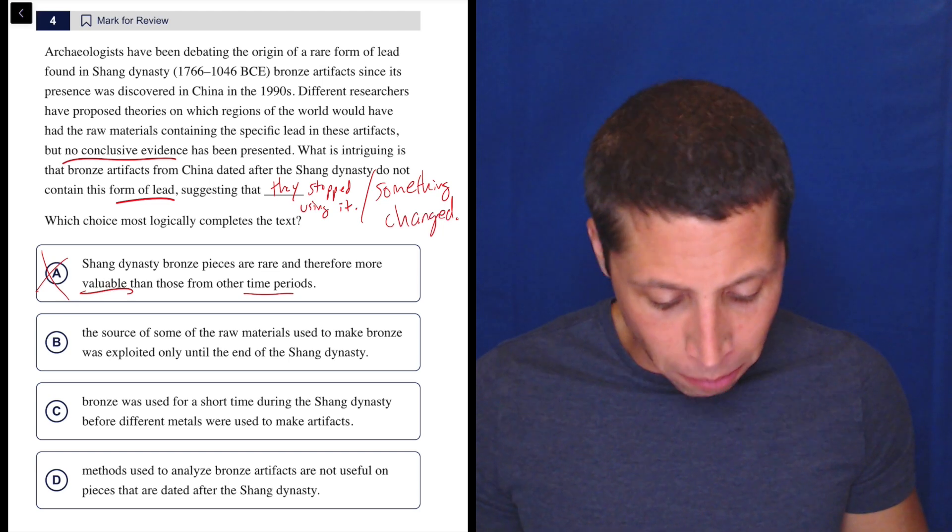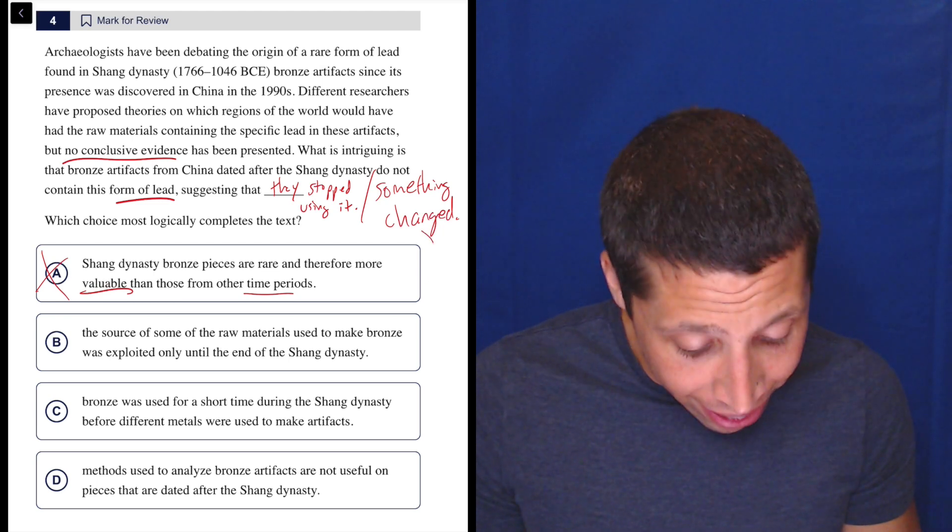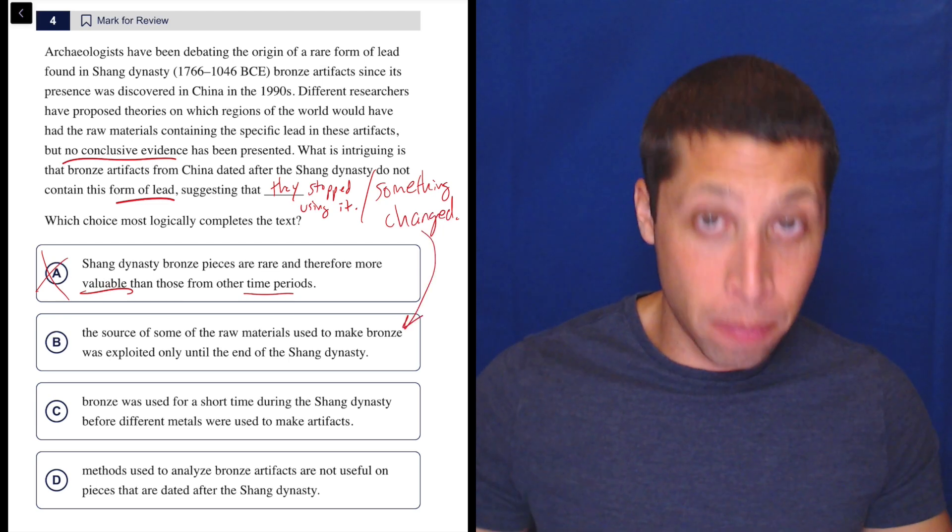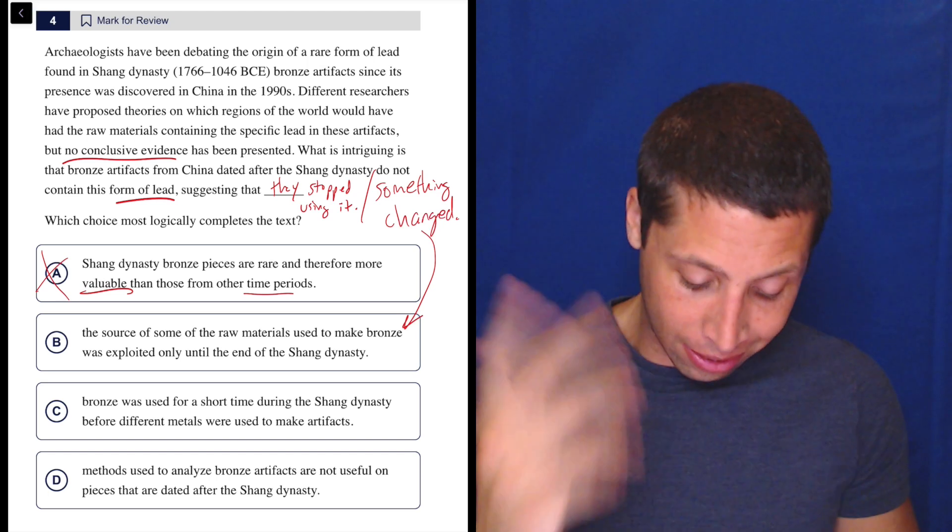B, the source of some of the raw materials used to make bronze was exploited only until the end of the Shang Dynasty. Then something changed. They stopped getting it, right? That's kind of what I said. So that seems to match what I expected. That's a good sign.